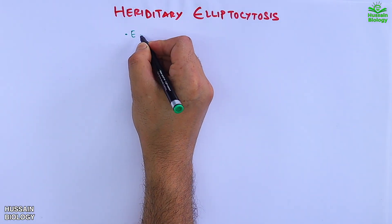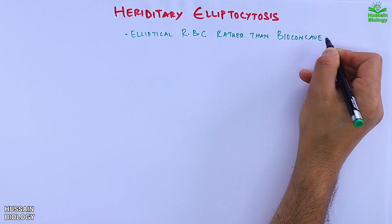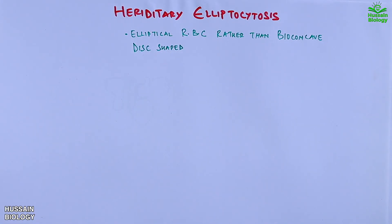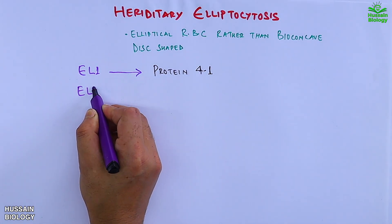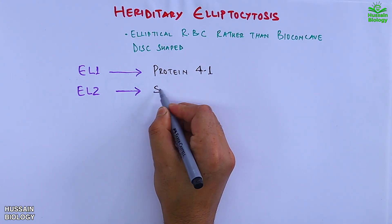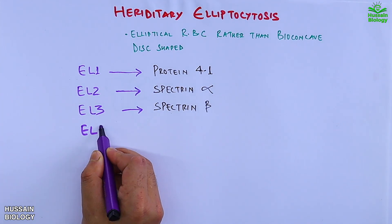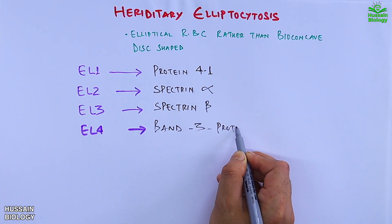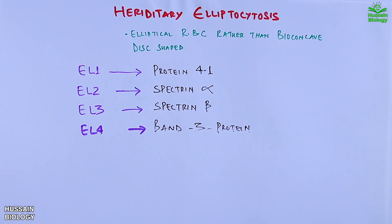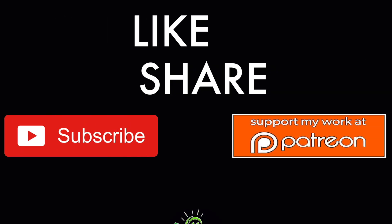Moving towards hereditary elliptocytosis, where we have elliptical RBCs rather than biconcave disc shape. Its subtypes are: EL1, mutation of protein 4.1; EL2, mutation of alpha-spectrin; EL3, mutation of beta-spectrin; and EL4, mutation of band 3 protein. This is the brief overview of RBCs and their structural components.